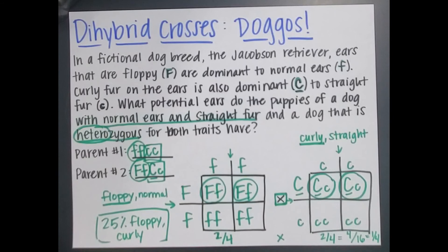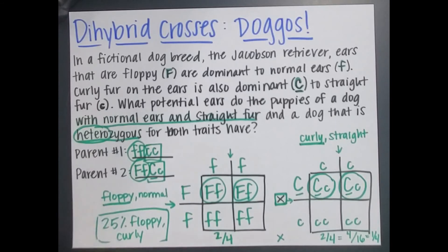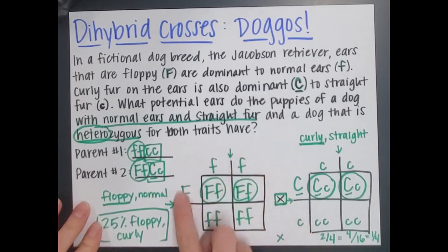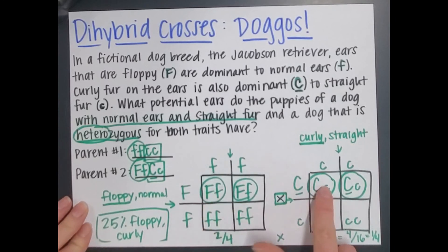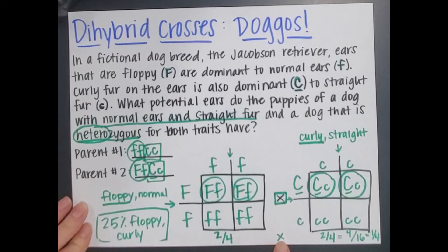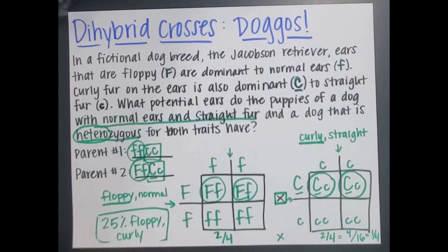The keys for dihybrid crosses: first, always write out the parent genotypes — you can't do anything until you do that. Second, use one Punnett square for one letter and a separate Punnett square for the other letter — don't mix them or you'll run into trouble. Third, when figuring out which offspring will have each trait, multiply those probabilities together — don't add. And that's pretty much it for dihybrid crosses. Please like, subscribe, and comment, and check out the other videos in the genetics section. Hope you learned something!